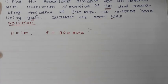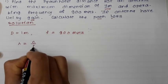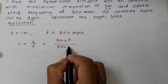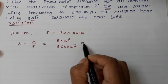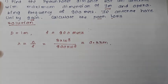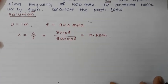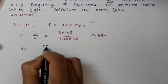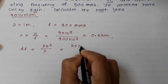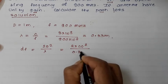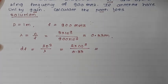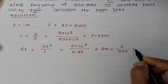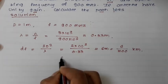Lambda is equal to c / f, where c is the speed of light. With f = 900 MHz = 900 × 10⁶ Hz, lambda comes out to 0.33 meters. Now we can calculate the Fraunhofer distance using DF = 2D² / λ = 2 × (1)² / 0.33, which gives DF = 6 meters, or equivalently 6/1000 = 0.006 kilometers.